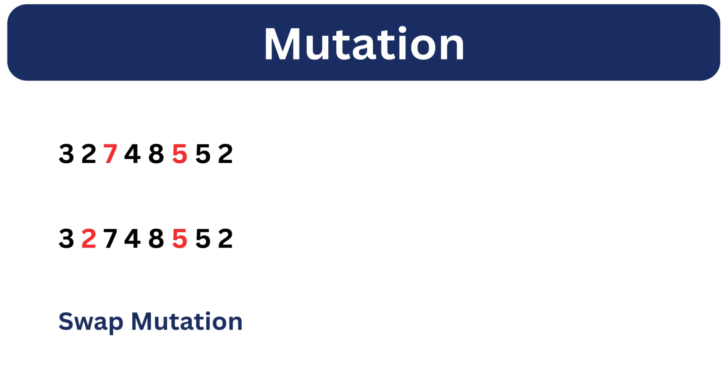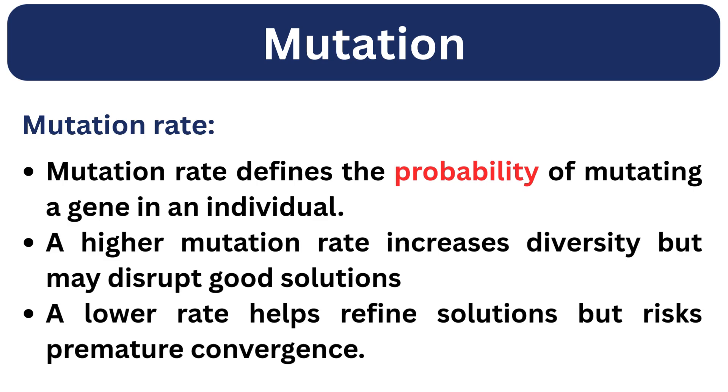We can also use swap mutations in this case. Select two genes in a chromosome and then interchange their positions. Mutation adds randomness but we don't want too much randomness. That's where mutation rates come in. Mutation rate defines the probability of mutating a gene in an individual. A higher mutation rate increases diversity but may disrupt good solutions. A lower rate helps refine solutions but risks premature convergence.